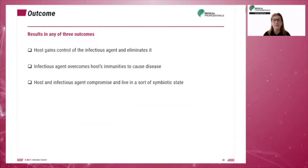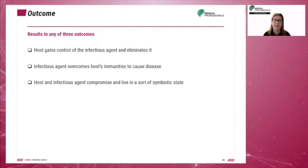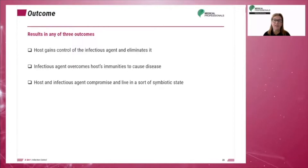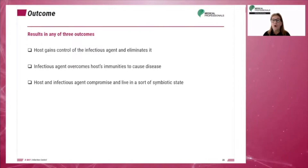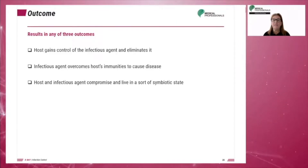There are three outcomes that can come from an infection. One, the host gains control of the infectious agent and eliminates it. Two, the infectious agent overcomes the host's immunities to cause a disease. Or three, the host and the infectious agent compromise and live in a somewhat anxious state of symbiosis.